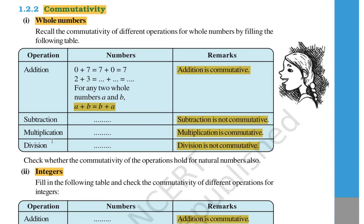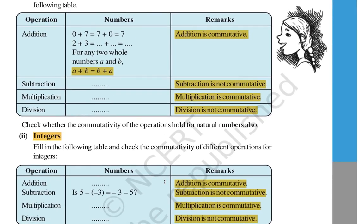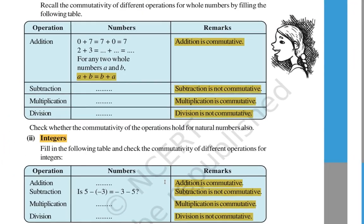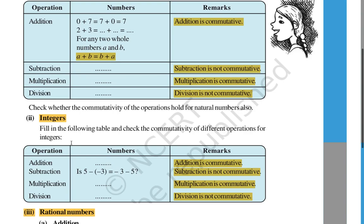For multiplication, 2 into 3 equals 6 and 3 into 2 also equals 6, so multiplication is commutative. For division, 5 divided by 7 and 7 divided by 5 are not the same, so division is not commutative. Generally, division does not follow commutative or associative properties.